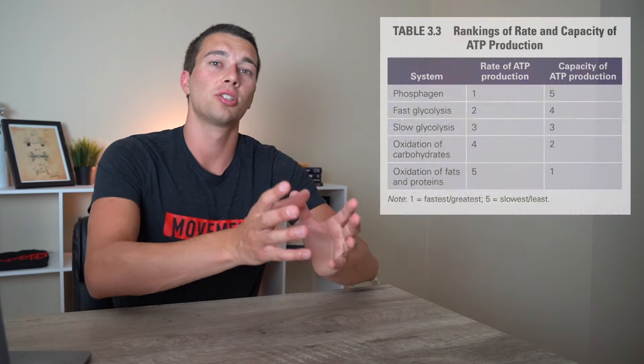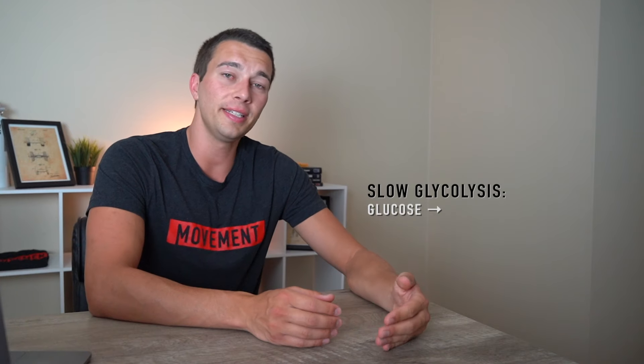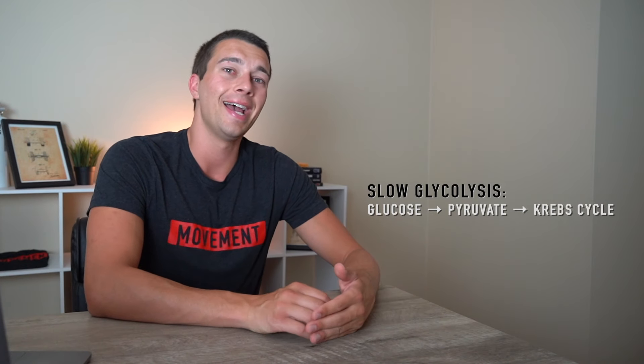Just to be clear, slow glycolysis is referring to breaking down glucose into pyruvate, and then sending it into the Krebs cycle and into oxidative phosphorylation to be fully oxidized. If that pyruvate was turning to lactate, that would be fast glycolysis or anaerobic glycolysis. And in this 30 to 90 second range, we're going to use a mixture of both.